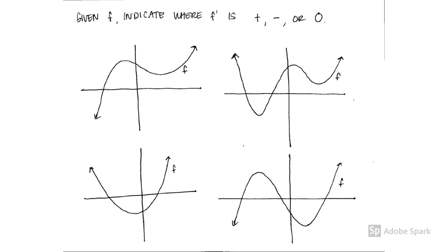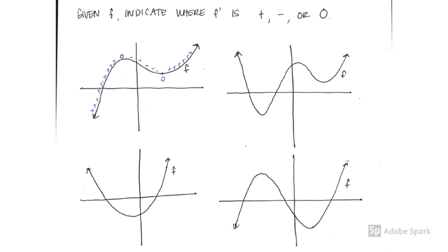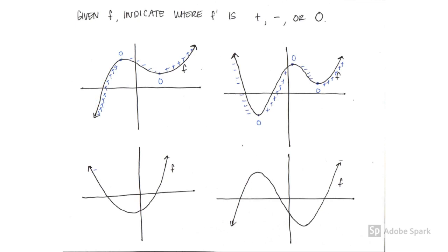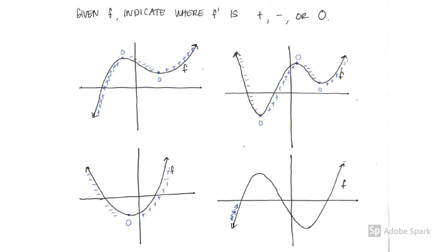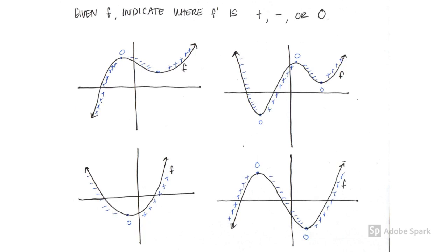Let's try some more examples. These are all graphs of the original function f, and let's indicate where the derivative is positive, negative, or zero. You can use color coding or symbols. For the first one, wherever the function is increasing the derivative is positive, wherever it's decreasing the derivative is negative, and zero at the hills and valleys. Here's what I got for the second, third, and fourth functions — wherever the function decreases then levels then increases, the derivative goes negative, zero, then positive.